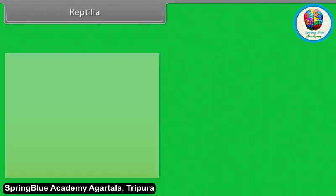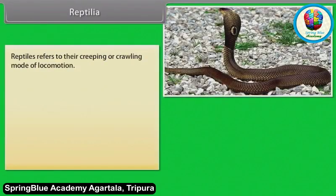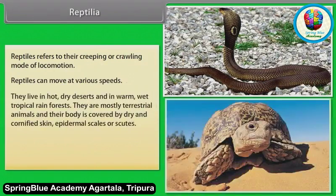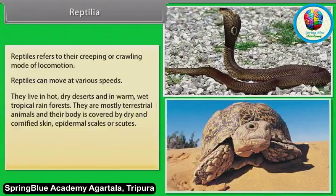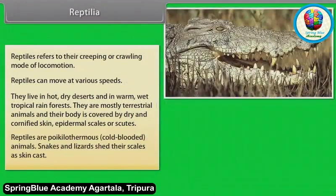Reptilia — Reptiles refer to their creeping or crawling mode of locomotion. They live in hot dry deserts and in warm wet tropical rainforests. They are mostly terrestrial animals and their body is covered by dry and cornified skin, epidermal scales or scutes. Reptiles are poikilothermous or cold-blooded animals.